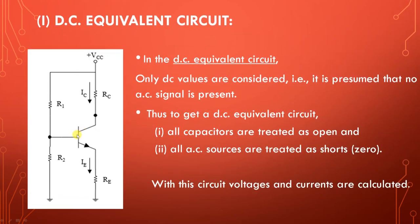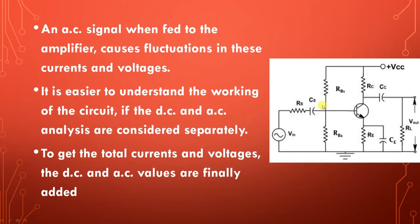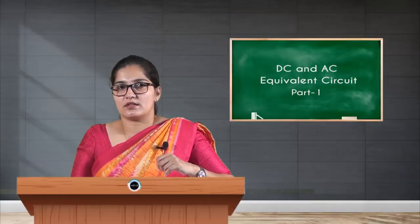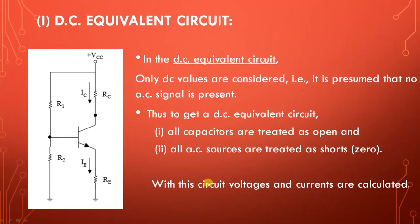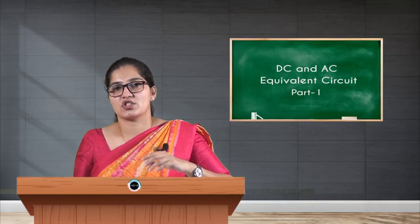One end of the base is connected to the junction itself. This part is not there because the AC source is shorted and CS is treated as open. RS is inside Vin itself, so that is shorted. We are left with only the DC bias network, and the output capacitor is also open. When both output capacitors are open, RL has no meaning, and only the remaining portion of the circuit represents the DC equivalent circuit.